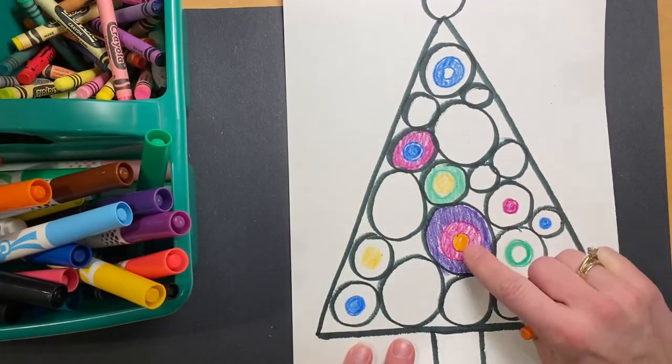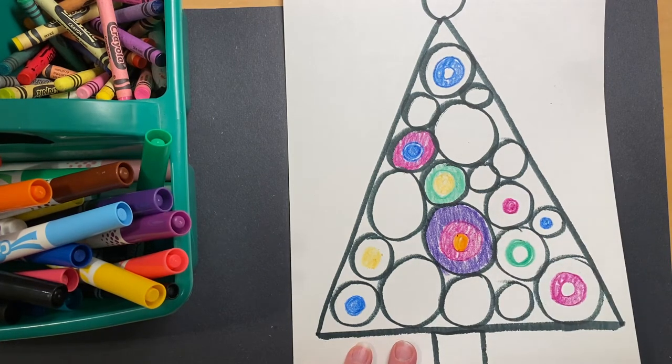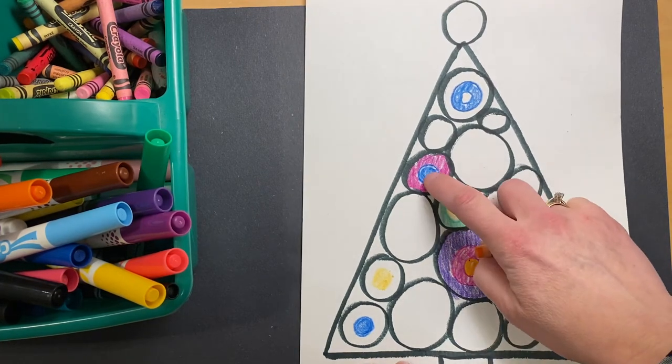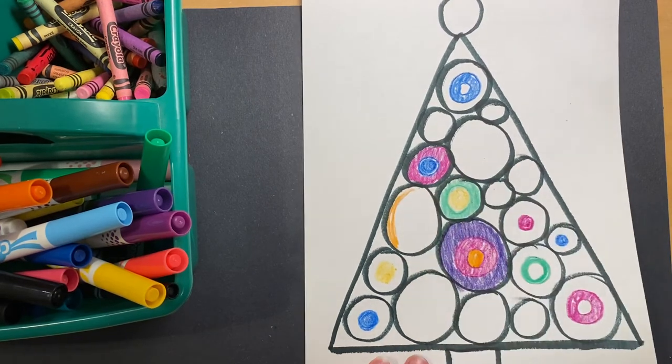And then let's put orange on the inside. So you see how this looks like a small, medium, large. Maybe you can describe that to a grown-up in your house. Small, medium, and then large. All right.